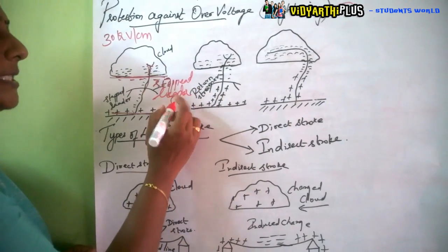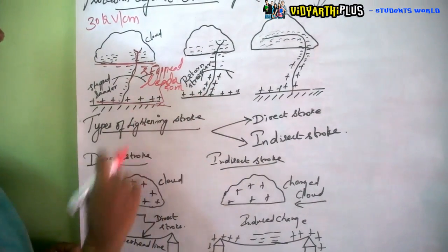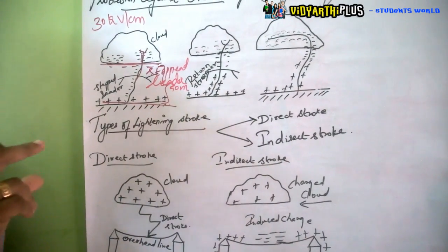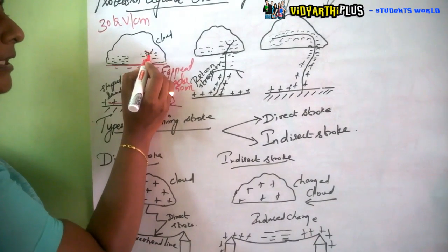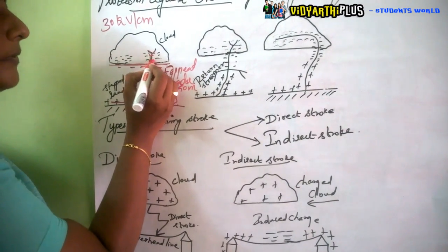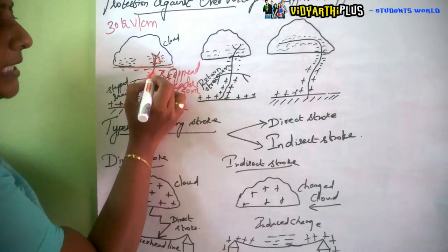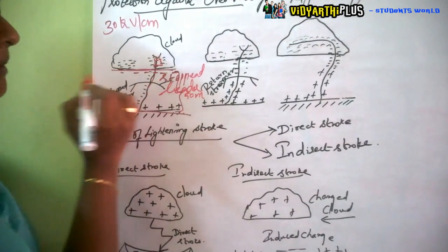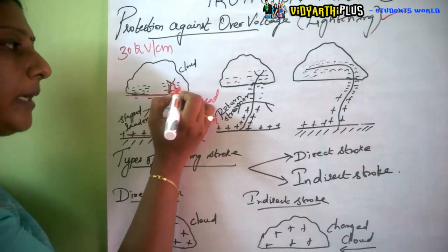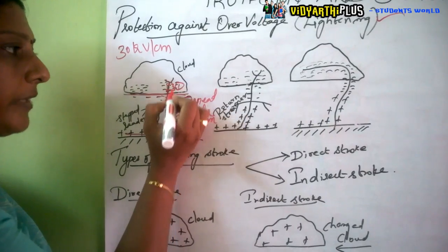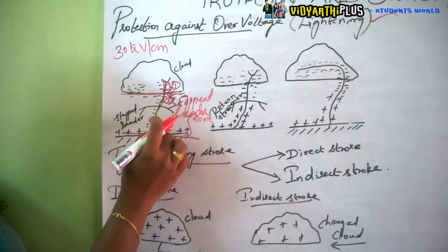Each step of the stepped leader covers a distance of 50 meters. It starts, comes down 50 meters, and stops. Then again it starts, comes down another 50 meters, and stops — progressing as first step, second step, third step, and so on.